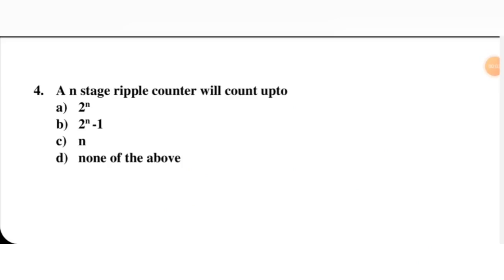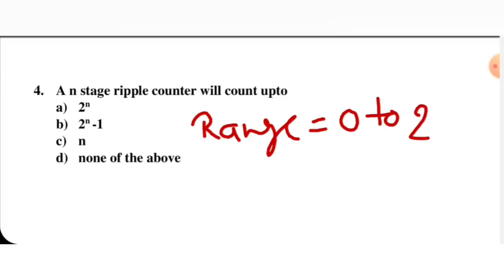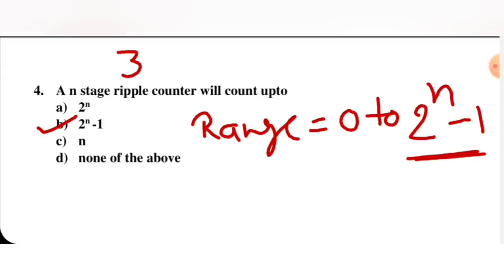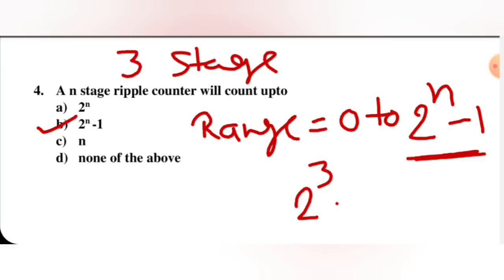Next question: if n flip-flops are used, a ripple counter will count up to a maximum. The counting range is 0 to 2 raised to power n minus 1, so the maximum count value is 2^n − 1; B is the correct option. For example, for a 3-stage ripple counter, 2 raised to power 3 minus 1 equals 7. This is the general formula.